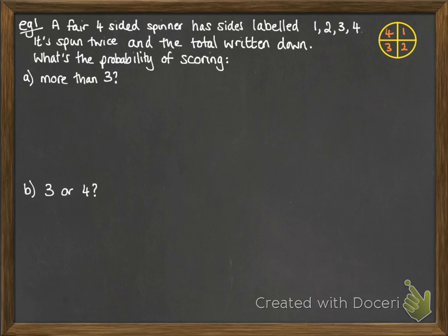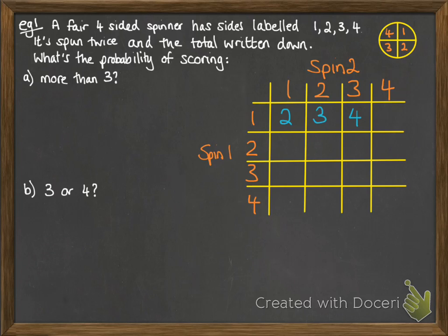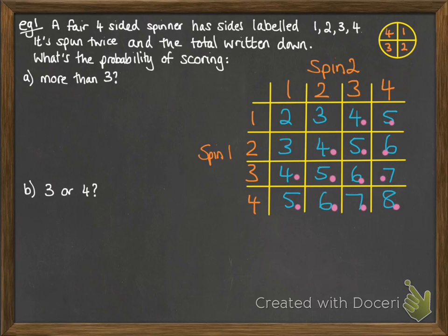We've got a fair four-sided spinner with the sides labelled 1 to 4. It's spun twice and the total is written down, and we want to find two probabilities. We need to draw a sample space — the easiest one here is a two-way table. Looking for scores more than 3, those are marked with a pink dot — there are 13 of them out of 16 possible scores, so we get 13 out of 16. Getting a 3 or a 4 are those circled with the green loop — there are 5 ways, so it's 5 out of 16.